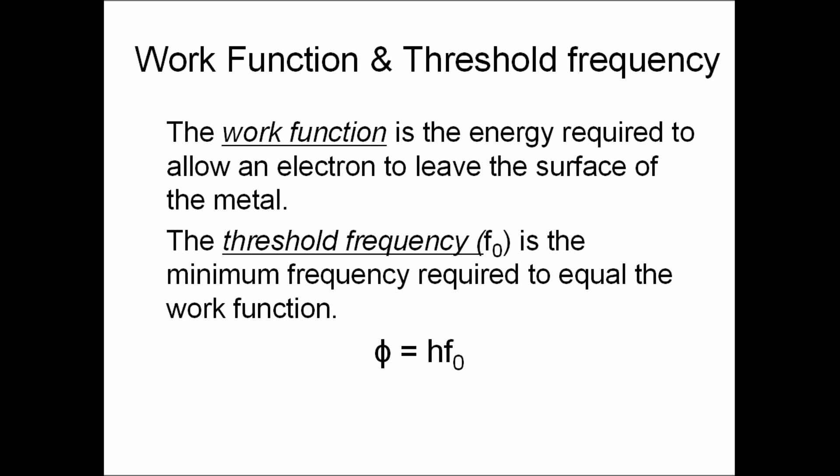The work function, which has the symbol Xi, is the minimum energy needed to remove the loosest electron from the surface of a metal. And for a given metal, the frequency below which photo emission won't occur is called the threshold frequency.